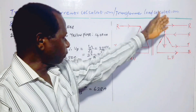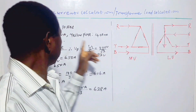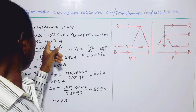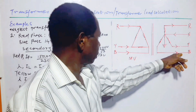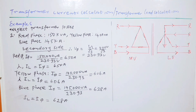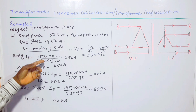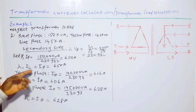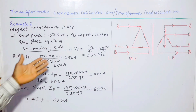Moving on to question two: the load is now unbalanced, with different magnitudes on the three phases. For the red phase: 150,000 VA / 230.3 V = 650 amperes. For star connection the line current is always equal to the phase current, so I_line = I_phase = 650 A.